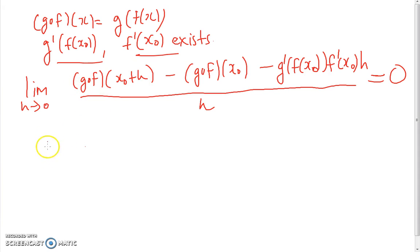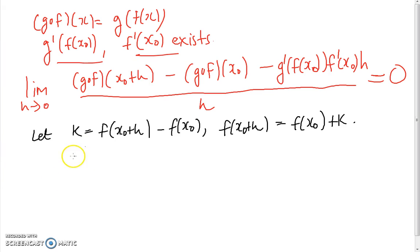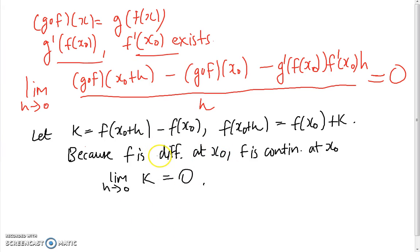To make things easier, we make the substitution k = f(x₀+h) − f(x₀), so that f(x₀+h) = f(x₀) + k. We also notice that because f is differentiable at x₀, f is continuous at x₀, and so by definition, the limit as h→0 of k is equal to 0. That follows by the definition of continuity of f at x₀.